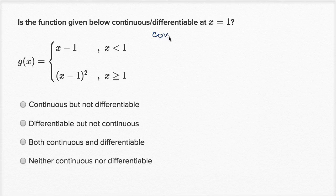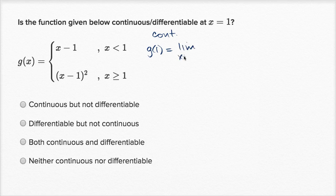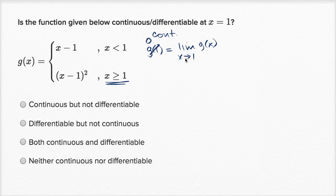So let's do this step by step. First let's think about continuity. For g to be continuous at x equals one, that means that g of one must be equal to the limit as x approaches one of g of x. Well, g of one — we're going to fall into this case — one minus one squared is going to be zero. So if we can show that the limit of g of x as x approaches one equals zero, then we know we're continuous there.